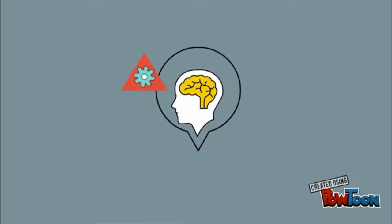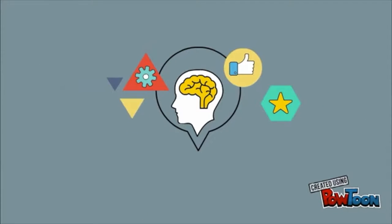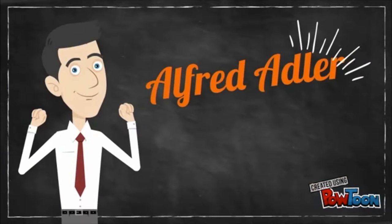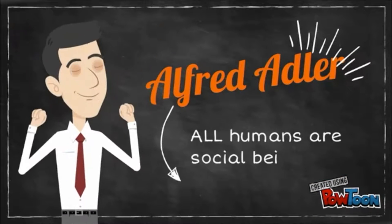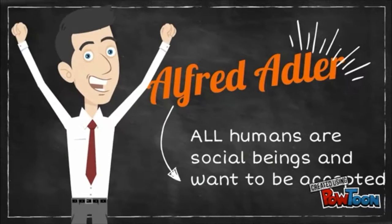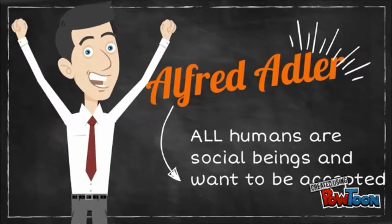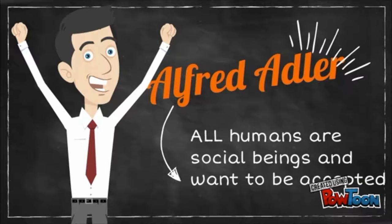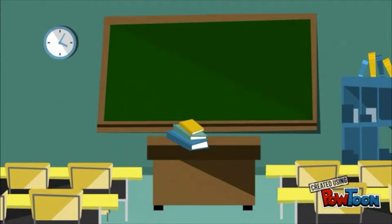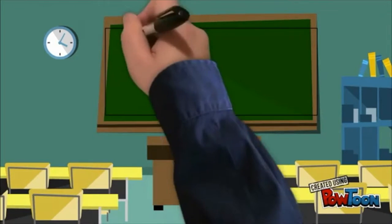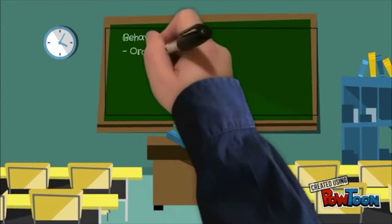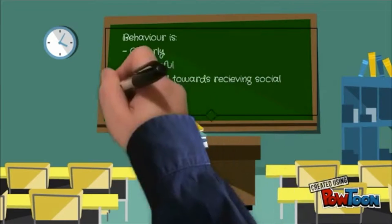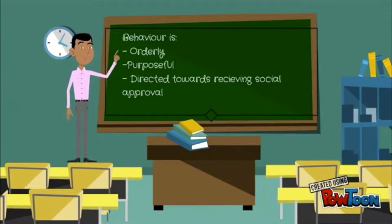The Social Discipline Theory by Rudolf Dreikers. Dreikers was highly influenced by social psychologist Alfred Adler. Adler believes that every human wants to belong and feel accepted by others. He held the belief that all humans are social beings, and that all behavior, including misbehavior, is orderly, purposeful, and directed towards receiving social approval.